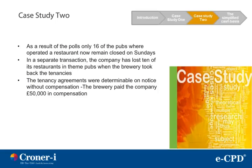The company spent £75,000 stimulating interest and obtaining the signatures necessary to require polls to be held. As a result of the polls, only 16 of the pubs were operated and restaurants now remain closed on Sundays. In a separate transaction, the company has lost 10 of its restaurants in theme pubs when the brewery took back the tenancies. The tenancy agreements were determinable on notice without compensation. The brewery paid the company £50,000 in compensation.